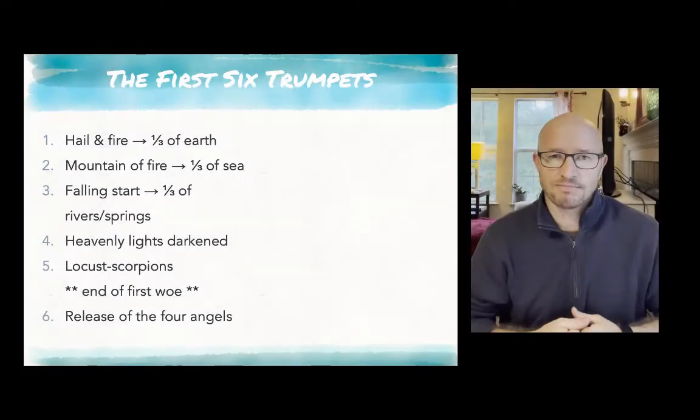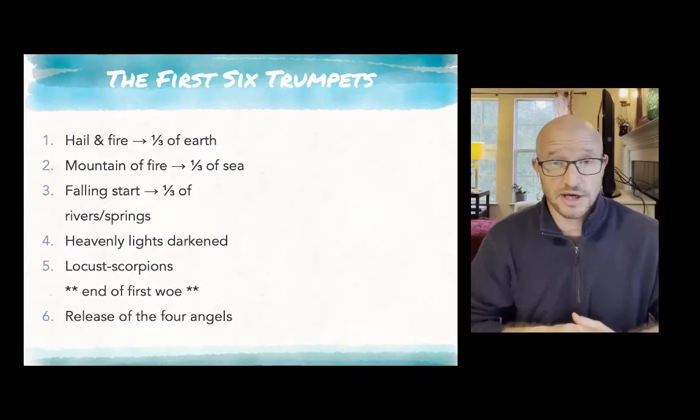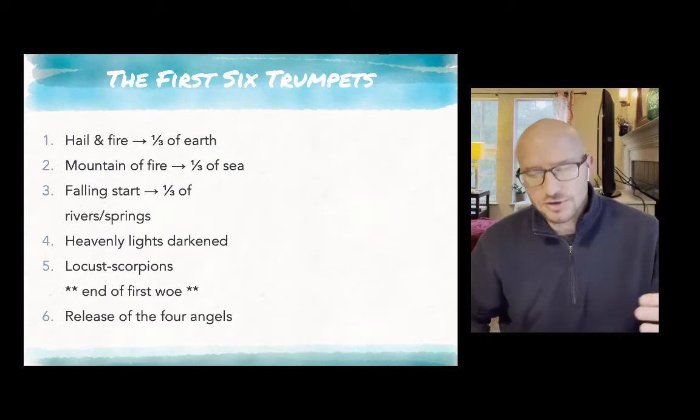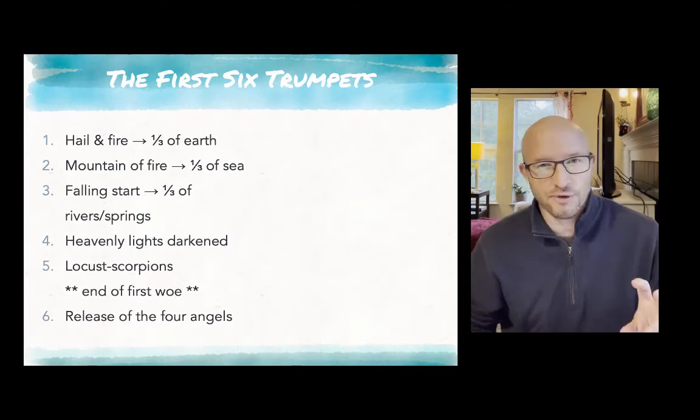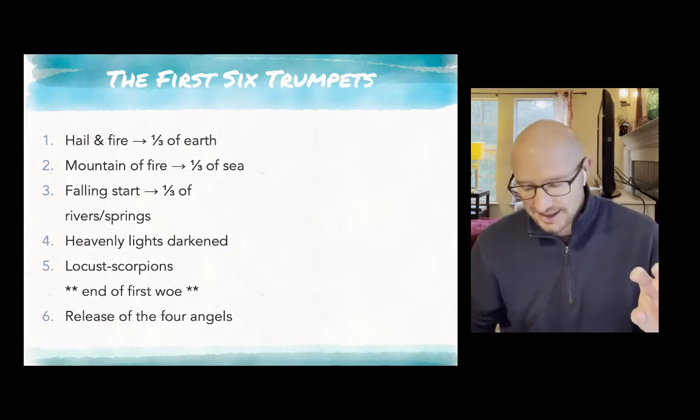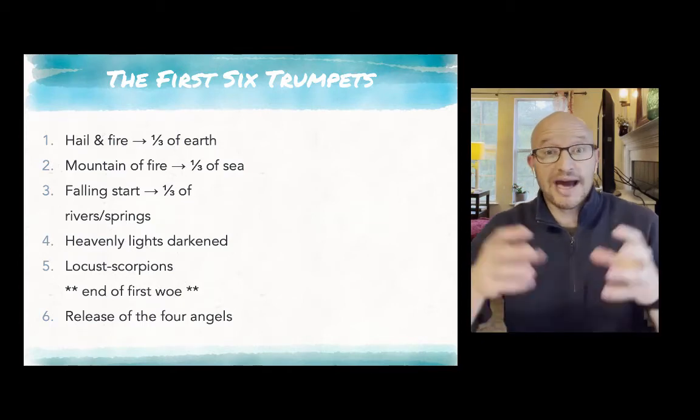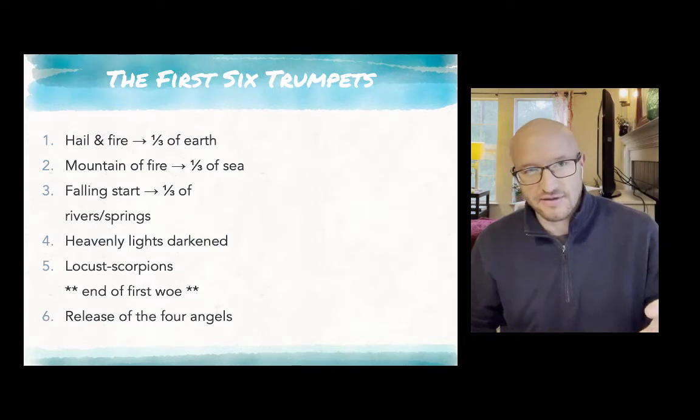Let's talk now about the six trumpets that we read about in chapters 8 and 9, their order and what we see going on. The first trumpet is one that is sent to earth. It's a woe or a plague or a catastrophe that affects the earth. It comes in the form of hail and fire and it consumes and destroys a third of the earth, a third of the dry land, the non-watery areas of the earth.